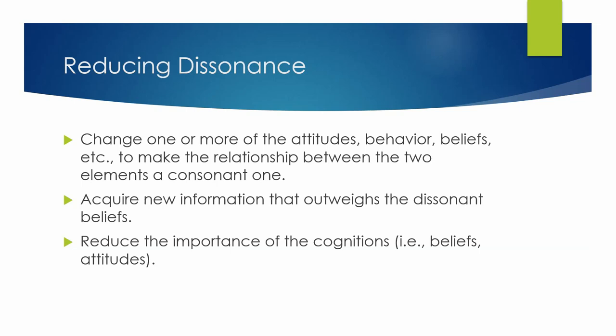There are a few ways that we can reduce dissonance. The first is we can change one or more of our attitudes, beliefs, or behaviors to make the relationship between two conflicting elements a consonant one. For example, let's say I previously had a pretty negative attitude towards Domino's Pizza. A few years back, Domino's started reinventing itself and changed the recipe behind its crust. I'm still going to have a pretty negative attitude, but maybe I'll shift it to saying, well, I'll give it a try — I don't have that negative attitude as much anymore, making the relationship a consonant one.